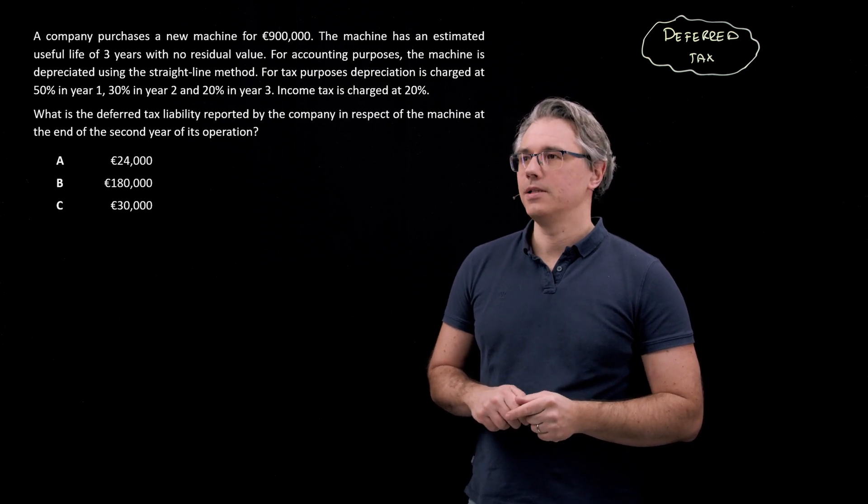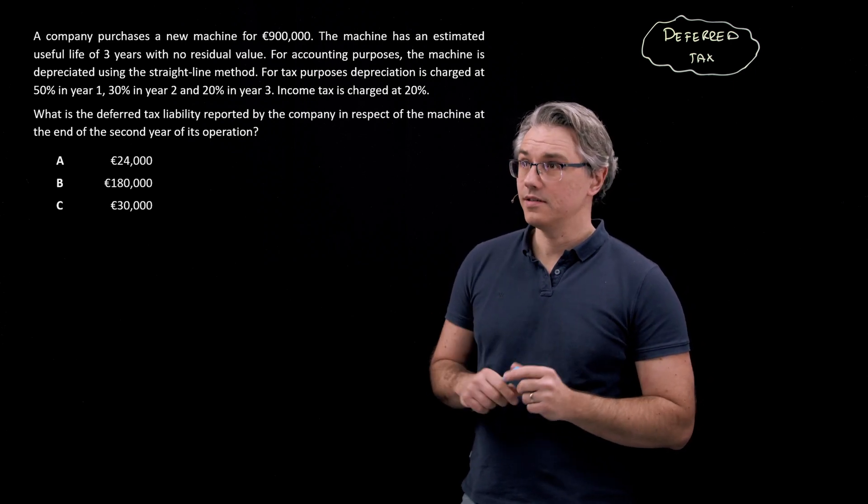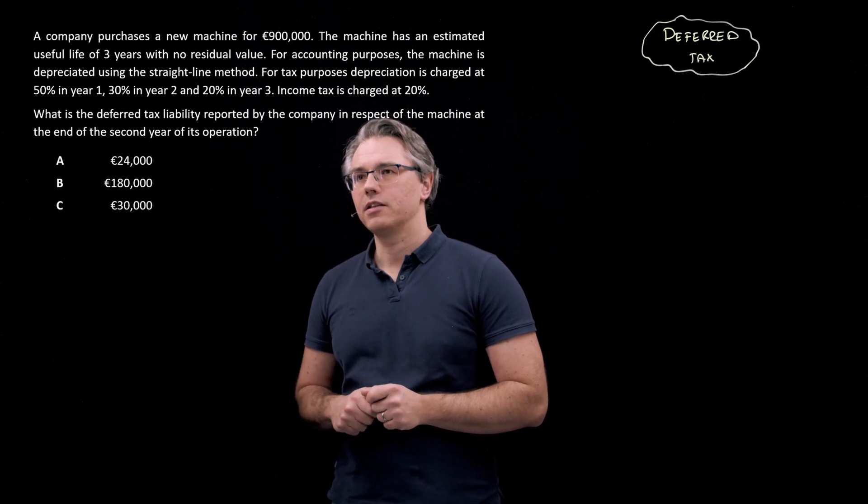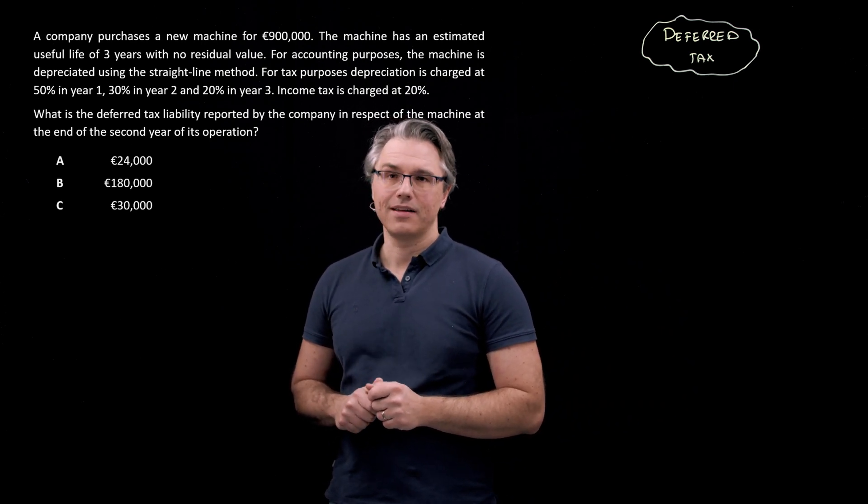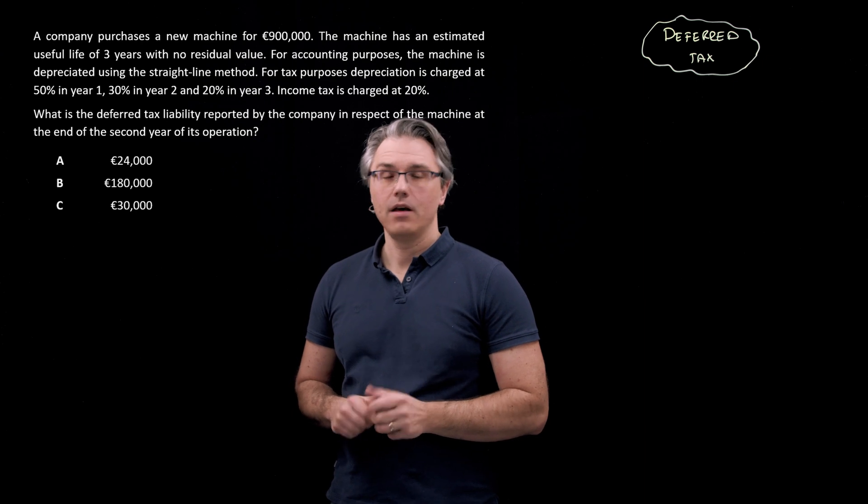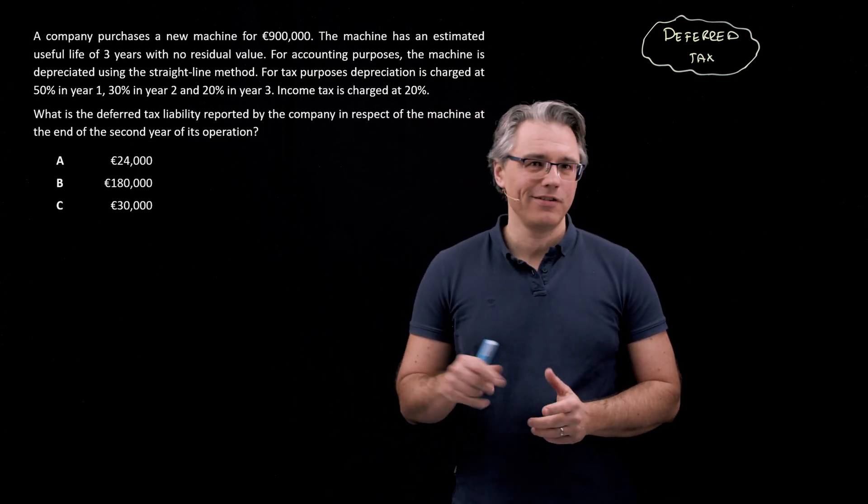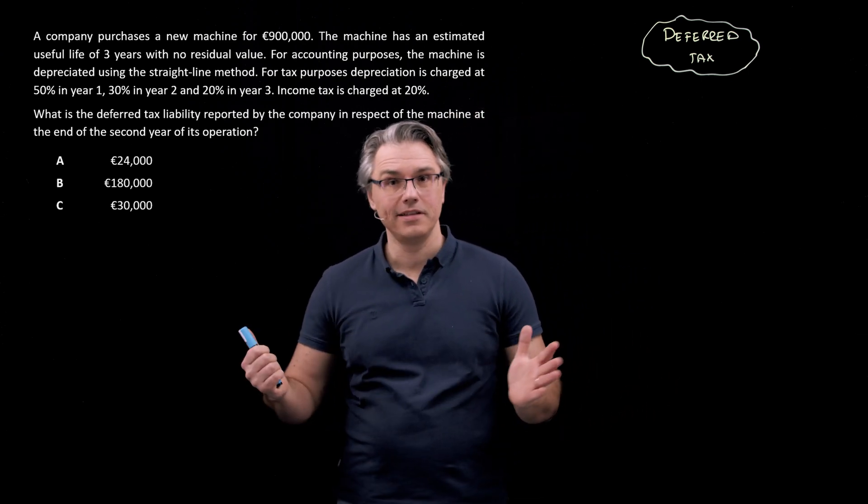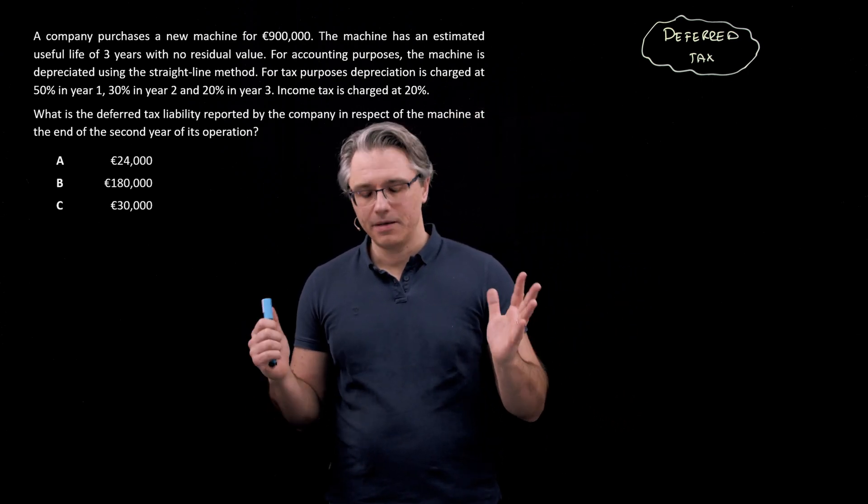Income tax is charged at 20%. What is the deferred tax liability reported by the company in respect of the machine at the end of the second year of its operations? In this question, we're not even asked about whether there's going to be a deferred tax asset or a deferred tax liability. We're asked for the amount.